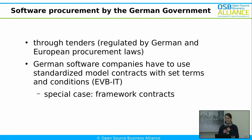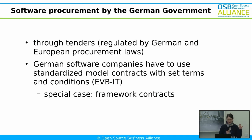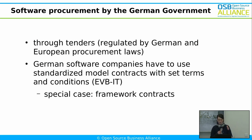The procurement works through tenders, and these are regulated by German and European procurement laws. Usually when German software companies want to sell software to the administration, they have to use standardized model contracts with set terms and conditions. There are around 12 or 13 different of these, depending on whether you are adapting a software, developing it from scratch, or providing hardware support. There's also a special case: sometimes software is sold to the government through framework contracts — Microsoft uses those. These framework contracts are often used by very large companies, but also sometimes by smaller and open source companies. But today I just want to focus on the model contracts.